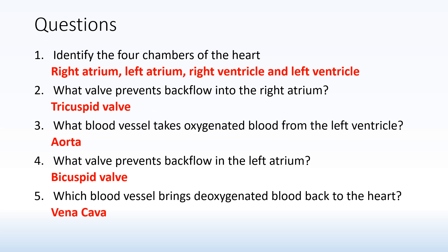Let's go through the answers. Question one: identify the four chambers of the heart. You've got the right atrium and left atrium, which are the upper chambers, and the right and left ventricle. Question two: what valve prevents backflow into the right atrium? Remembering the 'RI' will help us identify that it is the tricuspid valve.